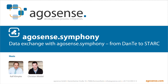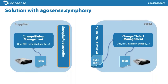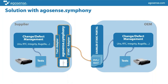My name is Ralf Klimke, responsible for sales and marketing, and next to me is Christian, responsible for services and product development. On the left-hand side we have a supplier who is connected or wants to connect to the Stark platform with Argosense Symphony. On the other side we have the respective tool adapter. The Daimler Stark portal or API will be accessible directly via the internet, so it is no longer necessary to have any VPN connection like you probably established with Dante.